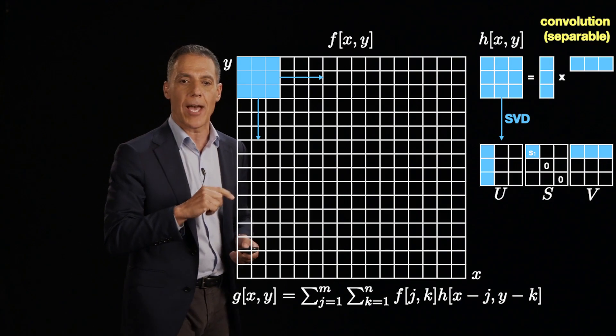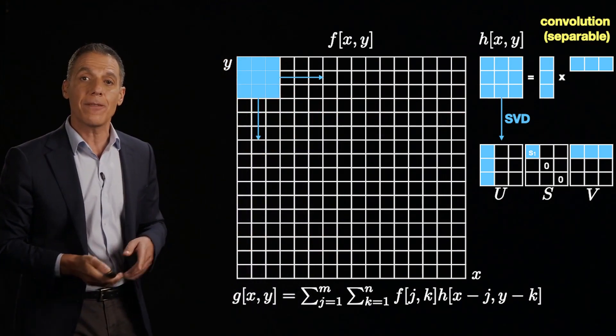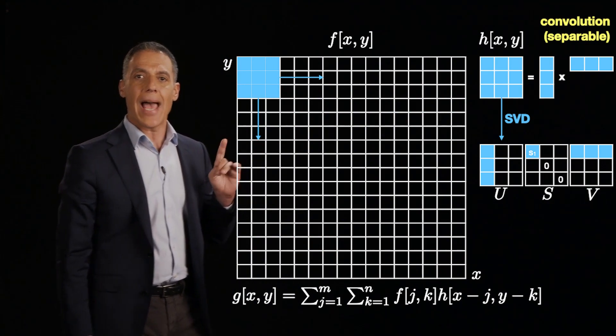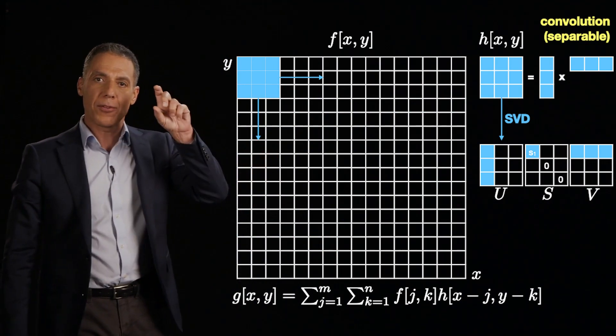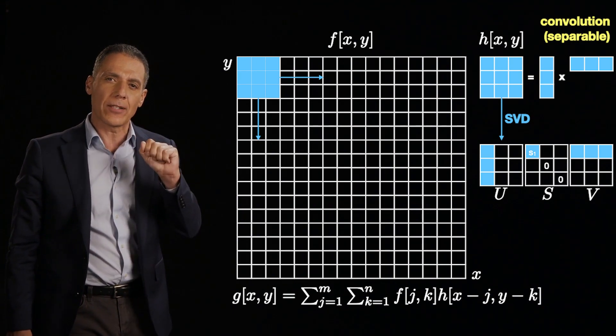So what do I mean by that? Take your 3 by 3 unit impulse response, your kernel there. If it can be written as an outer product of a 3 by 1 column vector and a 1 by 3 row vector.